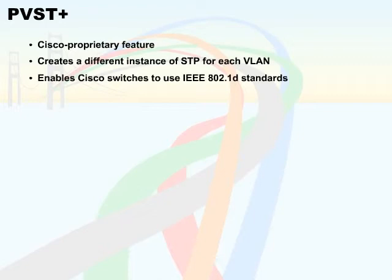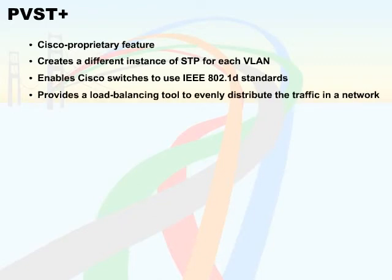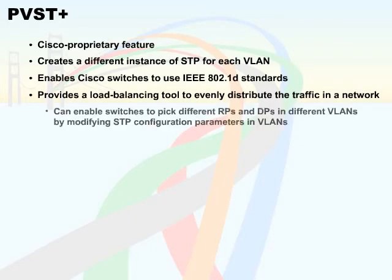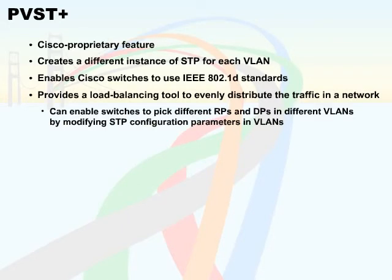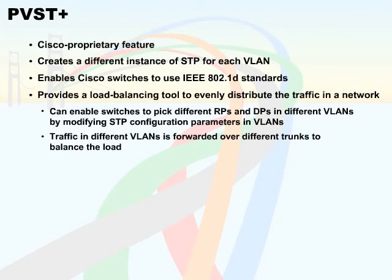PVST Plus also provides a load balancing tool to evenly distribute the traffic in a network. You can enable switches to pick different RPs and DPs in different VLANs by modifying STP configuration parameters in VLANs. As a result, traffic in different VLANs is forwarded over different trunks to balance the load.